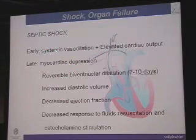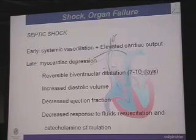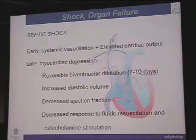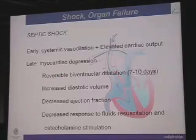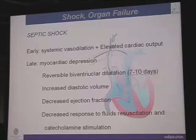In the early moments of sepsis, we will have systemic vasodilatation with elevated cardiac output. But in the late part of the problem, we will have myocardial depression because of cytokines and nitric oxide. The result of this is reversible biventricular dilatation. This dilatation will last more or less seven to ten days and will be reversible. We will have an increased diastolic volume, a decreased ejection fraction, a decreased response to fluid resuscitation, and catecholamine stimulation.